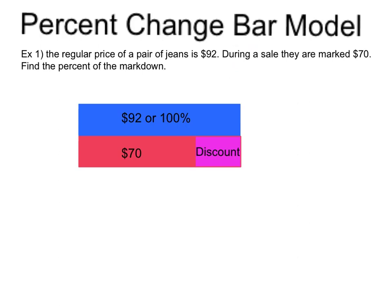Let's see how we're going to solve this. First, I wanted to show you a bar model. So we know that 100% is $92. So this bar is representing the total cost of the jeans. And then we have a discount. The new price is $70. So the $70 plus the discount equals the 100%. What we're trying to find is what this is as a percent.